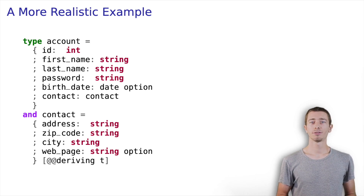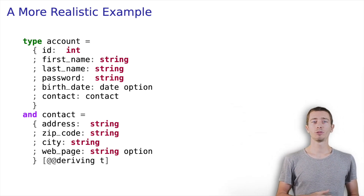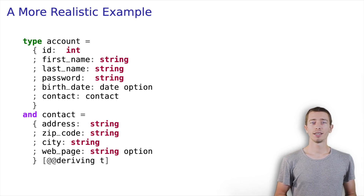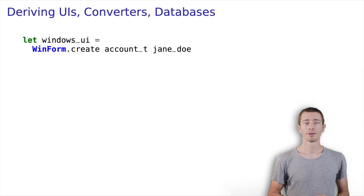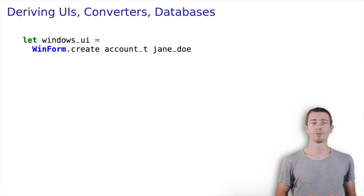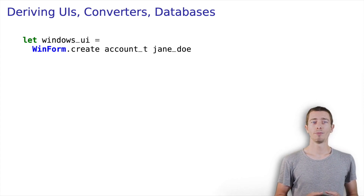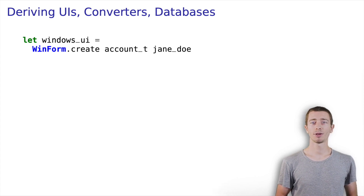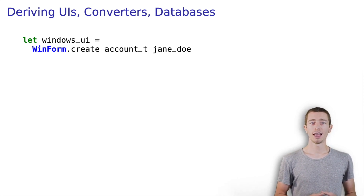Let's look at a more realistic example: a nested form for login and contact information such as this one. You can see two useful but boring types. Plugging together a user interface for editing such accounts will take some time. But not at LexiFi. There, someone already implemented a generic user interface based on runtime types. Creating a Windows form is as easy as calling a function with a runtime type and some initial data as arguments. The rest happens automatically.